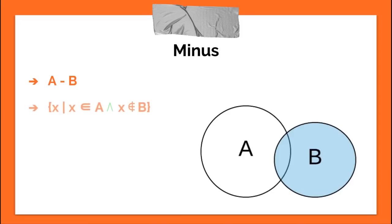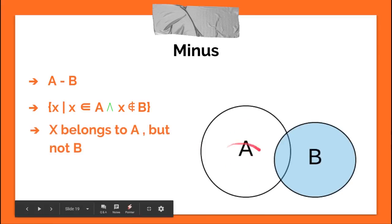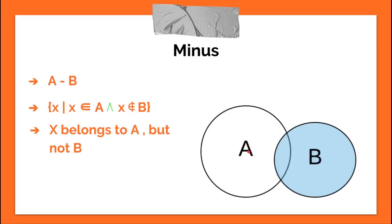A minus B. X such that X is an element of A, and X is not an element of B. So if you look here, this white area that's not shaded, that would be A minus B. That's the elements contained in A, but not in B.